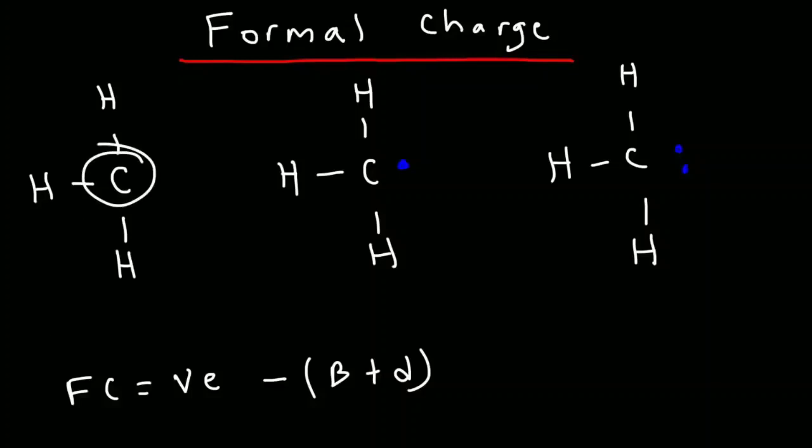So for the first example, carbon has four valence electrons. It's in group 4a of the periodic table. And in this example, it has three bonds, one, two, three, and it doesn't have any dots around it. So four minus three is one. So this particular carbon atom has a formal charge of plus one. So we could say that it has a positive formal charge.